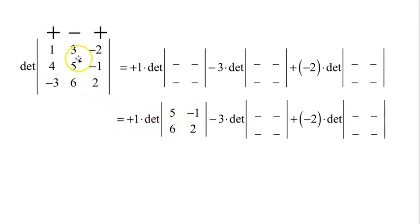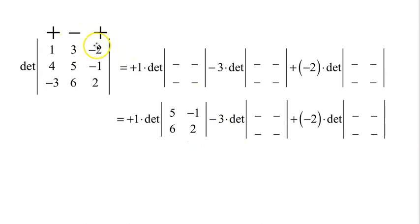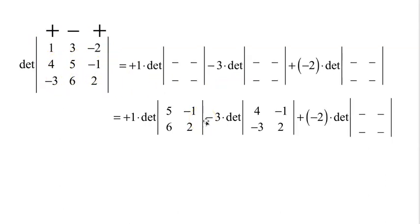Plus 1 times the determinant: cross out the column, cross out the row — we get [5, -1; 6, 2]. Now it goes minus 3 times its minor: cross out the row 3 is in, cross out the column. What's left is [4, -1; -3, 2]. That's the minor corresponding to 3, with the sign of minus because it goes plus-minus-plus across the top.